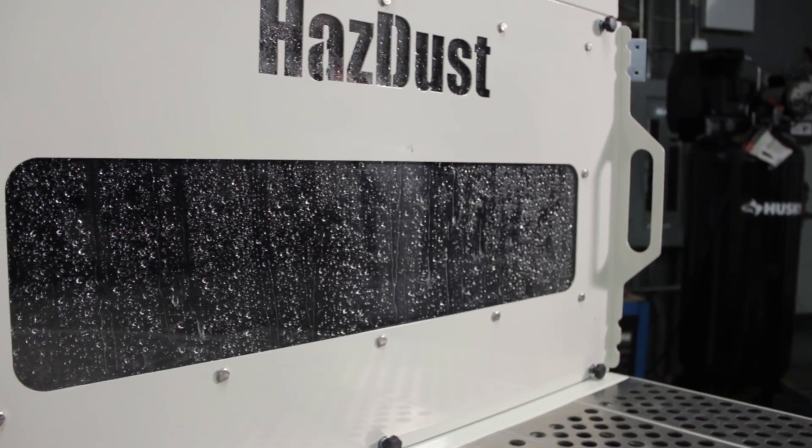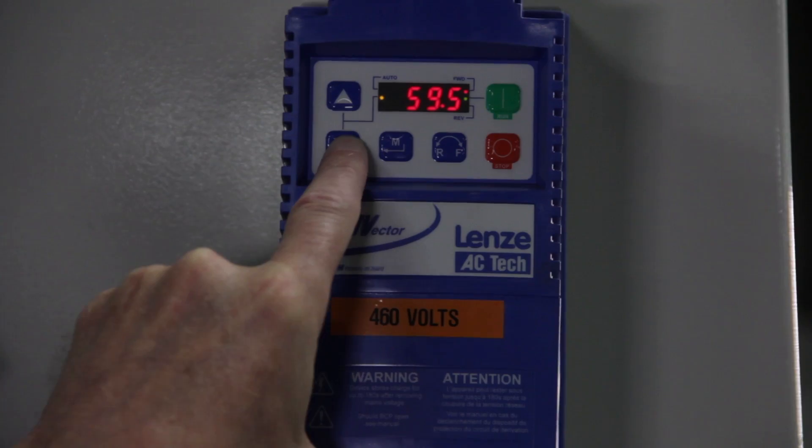The entire sump is made out of 304 SS and will not corrode due to the water. The HAZDUS works when the sump has the proper water level.